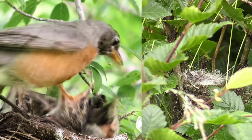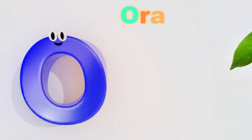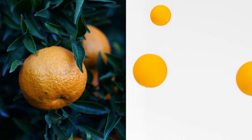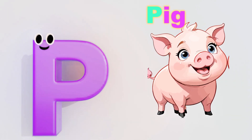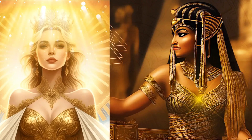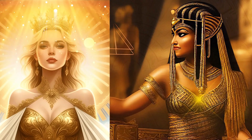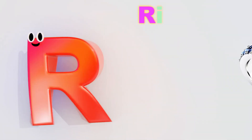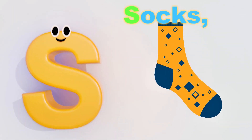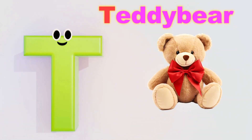N is for Nest. N, N, Nest. O is for Orange. O, Orange. P is for Pig. P, P, Pig. Q is for Queen. Q, Q, Queen. R is for Ring. R, R, Ring. S is for Socks. Socks, Socks.